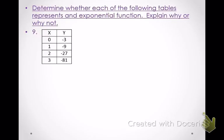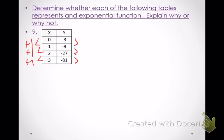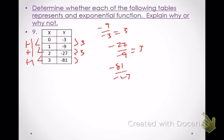Now check this next table. X values increase by 1 each time — constant difference. Check y values for a constant difference: subtracting 6 from negative 3 gives negative 9, but subtracting 6 from negative 9 gives negative 15, which isn't what we have. So it's not a constant difference. Instead, divide: negative 9 divided by negative 3 is 3, so we multiply by 3. Negative 27 divided by negative 9 is 3 again. Negative 81 divided by negative 27 is 3 again. So this is all multiplying by 3 — not a constant difference, but a constant ratio. Yes, this is an exponential function.